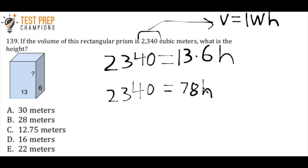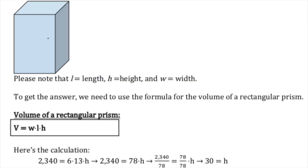Now if I have 78 times h, and I want to get h by itself, what I have to do is divide. So I'm going to divide by 78, but whatever I do to one side, I also have to do it to the other. So I'm going to take this big number, and I'm going to divide by 78, and I get 30 as my answer. So let me show you the written solution. You can pause the video, take all the time you need if you'd like to. If not, then we'll go right on to the next question.